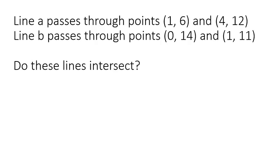Here's the first type of word problem. This is an exact sample from the Common Core suggested sample questions. Line A passes through the points (1, 6) and (4, 12). Line B passes through the points (0, 14) and (1, 11). Do these lines intersect?